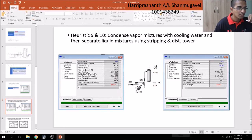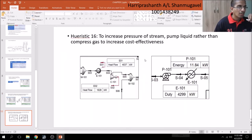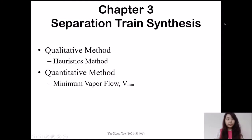Ethylene costs almost double compared to benzene, so we ensure benzene is in excess to completely consume ethylene during reaction. For heuristics 9-10, we condense vapor mixture using cooler before separator. For heuristic 16, to increase pressure of stream, we pump liquid rather than compress gas to increase cost effectiveness. The utility cost for heating and compressing is 5,625 kilowatts while pumping and heating is 4,310 kilowatts, a difference of 1,524 kilowatts.